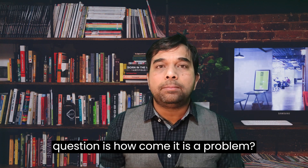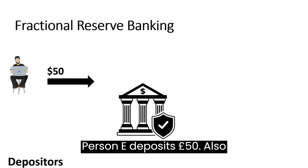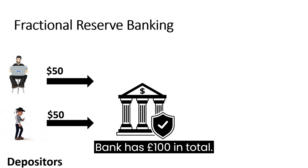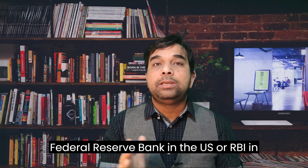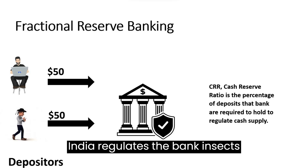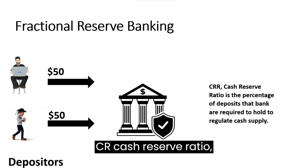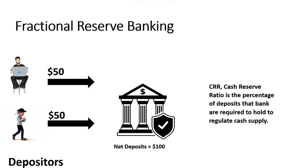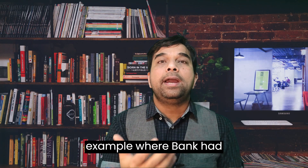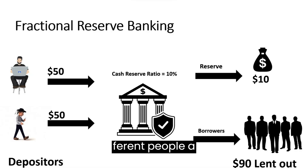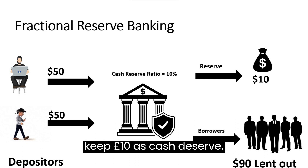Now the question is, how come it is a problem? For this, you need to understand fractional reserve banking. I will explain with the help of an example. Person A deposits 50 pounds, also person B deposits 50 pounds. Now the bank has 100 pounds in total. The Federal Reserve Bank in the US or RBI in India regulates the bank and sets CRR — Cash Reserve Ratio — which is the percentage of deposits that banks are required to hold to regulate cash supply. For instance, in our example where the bank had 100 pounds, if CRR is set to 10%, the bank can lend up to 90 pounds to different people and keep 10 pounds as cash reserve.